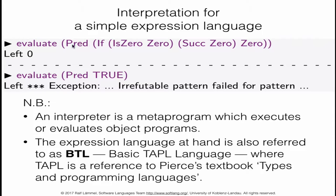Let's understand why this expression evaluates to zero. We have a conditional where the condition is 'is zero zero', which is obviously true. So we select the then-branch, which is zero, giving us one so far. Then we compute predecessor of one, which is obviously zero. Overall, an interpreter is just a meta-program which executes or evaluates object programs or program phrases — in this case, just expressions.